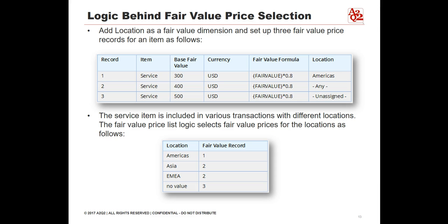For example, if you add a fair value dimension for location, and your account includes the locations Americas, EMEA, and Asia, the values for location on the fair value price record are Any, Unassigned, Americas, Asia, and EMEA. You add location as a fair value dimension and set up three fair value price records for an item. The service item is included in various transactions with different locations. The fair value price list logic selects fair value prices for the locations accordingly. If no fair value price record had been created with a location value of Unassigned, the results would be different — in that case, the revenue element with no value for its location would also use fair value record 2.